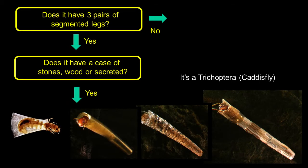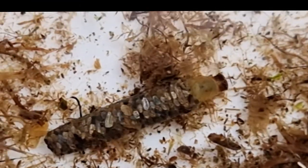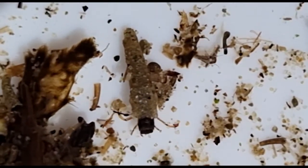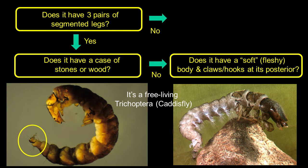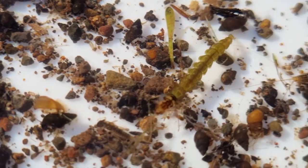What if we've got an animal that's got three pairs of legs but it's got some sort of case? This case may be made up of little pieces of stone, or it could be a secreted case with a golden or transparent colour, or made out of bits of wood or bits of leaves. Anything like this with three pairs of legs in a case is almost certainly a Trichoptera, a caddisfly. What if it's got three pairs of legs, no case, but it has a soft fleshy body with two claws or hooks at its posterior end? In that case it's a free-living caddisfly — again Trichoptera. These can be really abundant in streams and rivers and are often predatory.